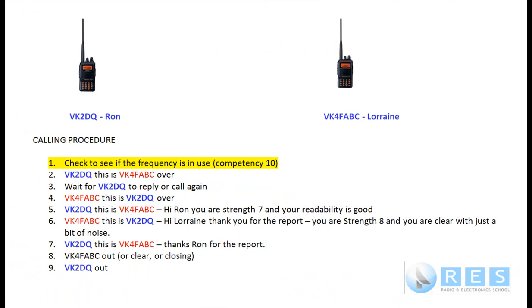Well, there you had a demonstration of two amateur stations contacting each other. Lorraine was VK4FABC — did you notice how Lorraine put out a call? She listened and opened her squelch because she was using a VHF radio, turned the volume up to make sure the frequency wasn't in use, put out a call to confirm, then called me, asked for a signal report, and gave me one as outlined in the text on this slide. If you can learn that, you'll do fine with competency number 11. Cheers for now — this is Ron, VK2DQ.